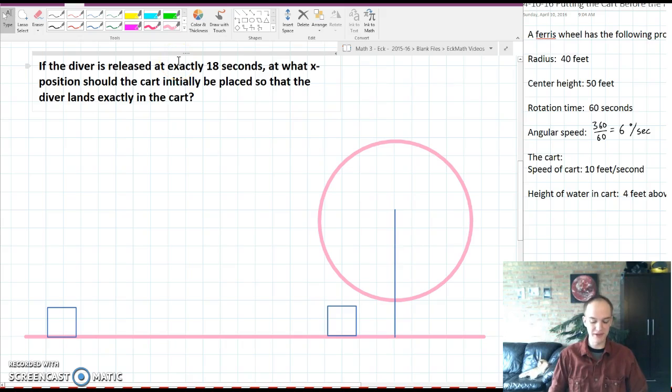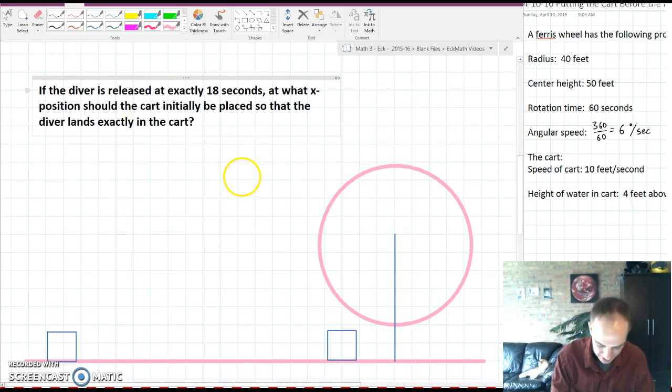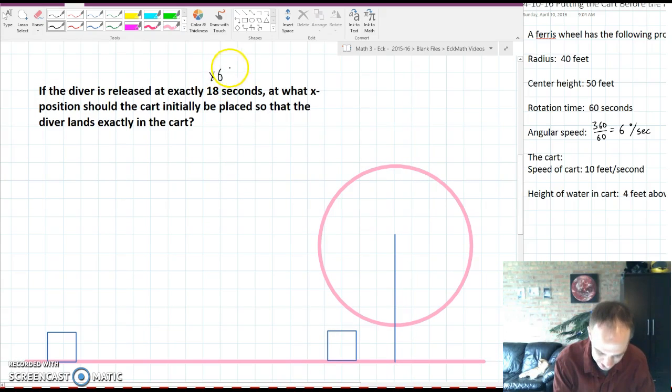And now for the big question. If the diver is released at exactly 18 seconds what x position should the cart initially be placed so that the diver will land exactly in the cart? Before we start calculating anything let's work through this problem a little bit. 18 seconds times 6 degrees per second will give 108 degrees.